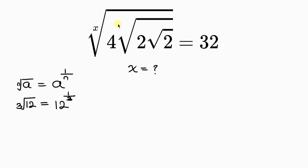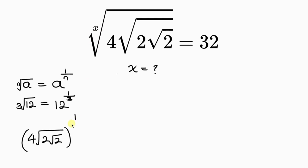Applying this property, I take the number inside — which is 4 times the square root of 2 times the square root of 2 — and raise it to the inverse of x, which is 1 over x. This is equal to 32 on the right.